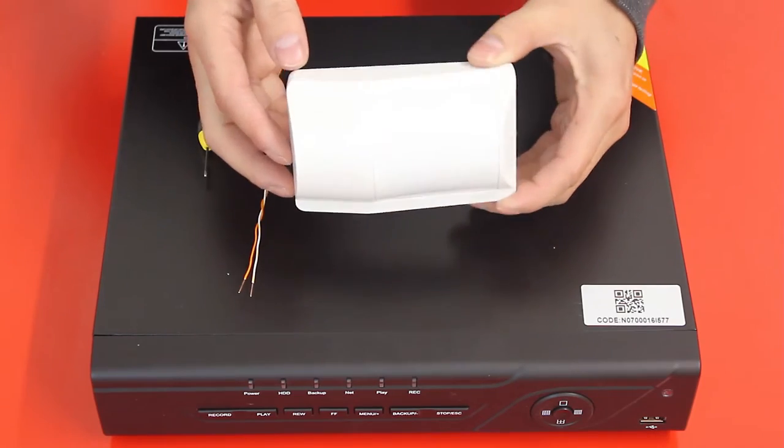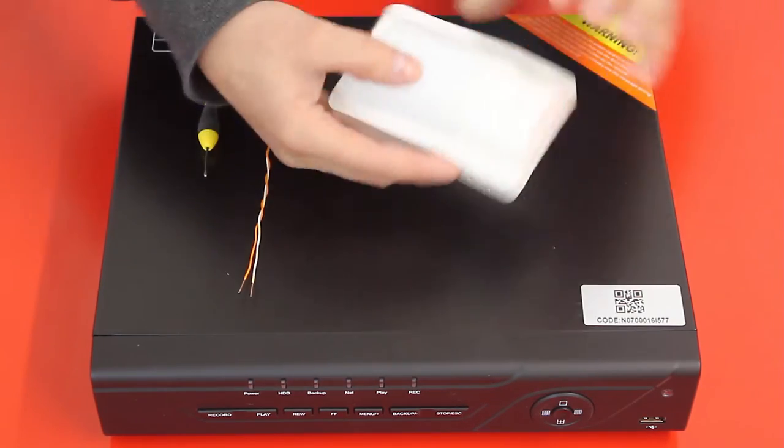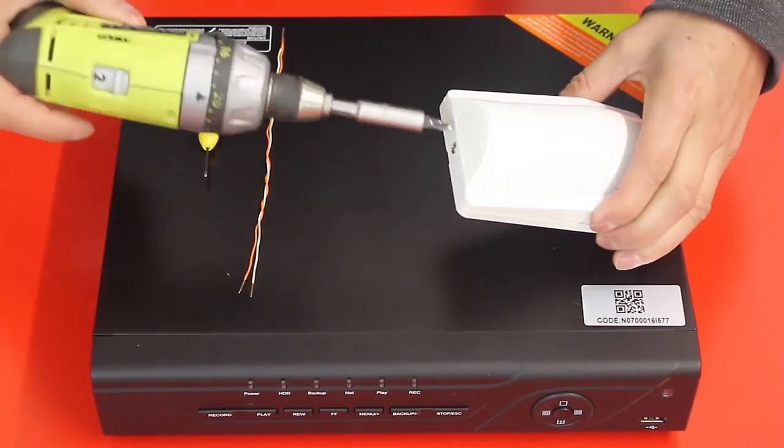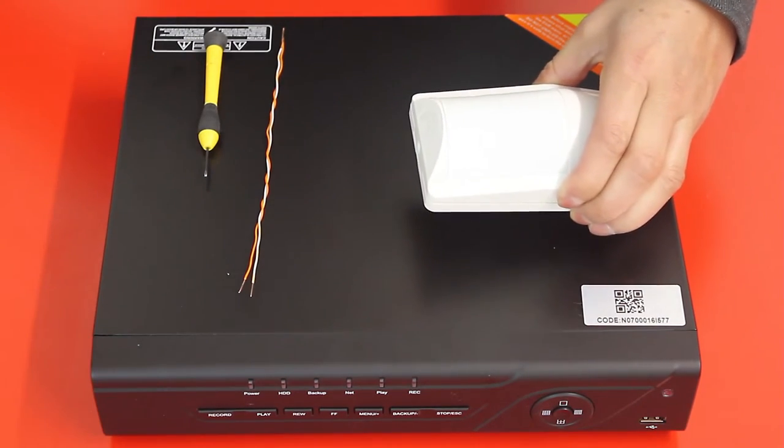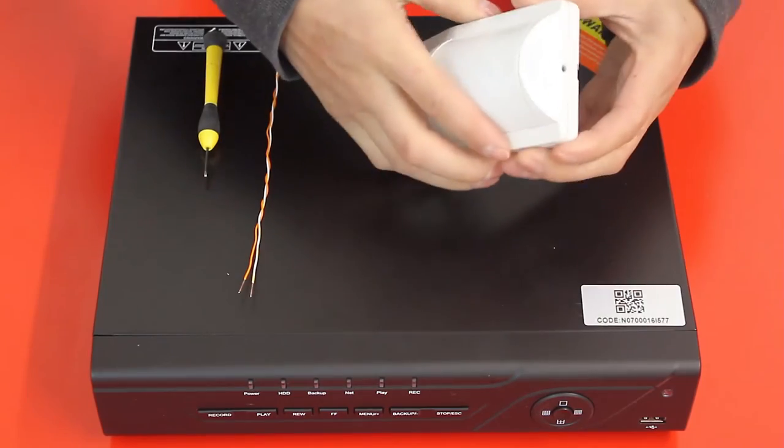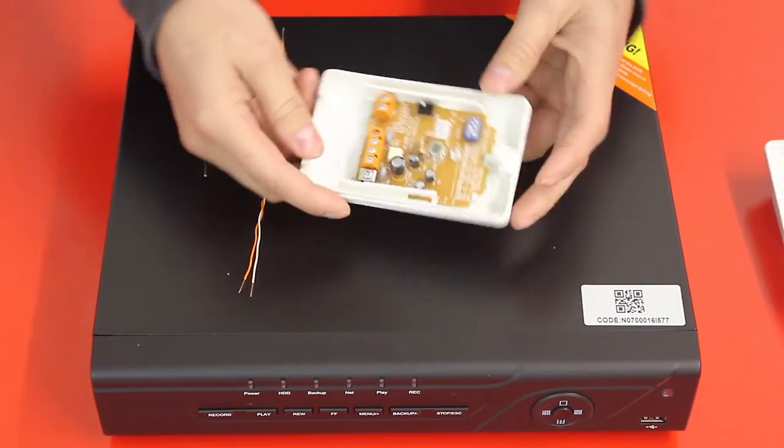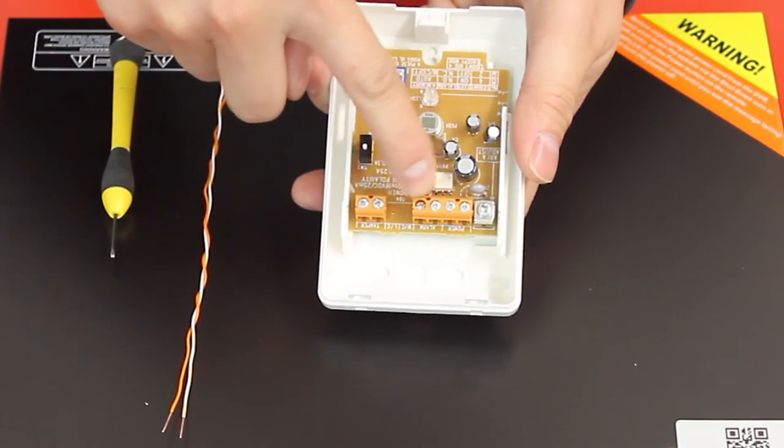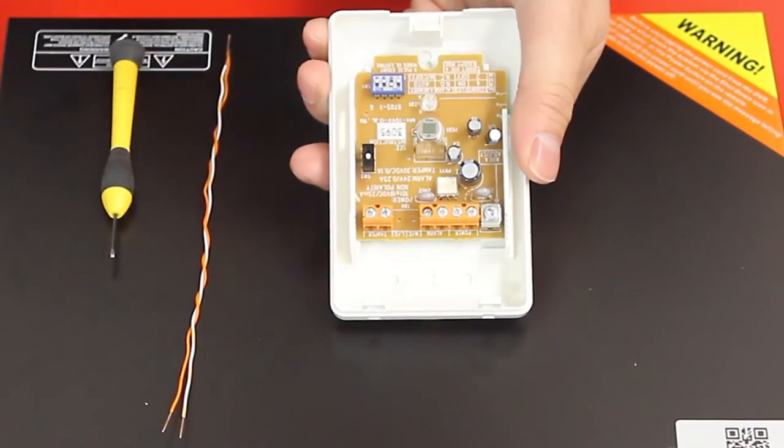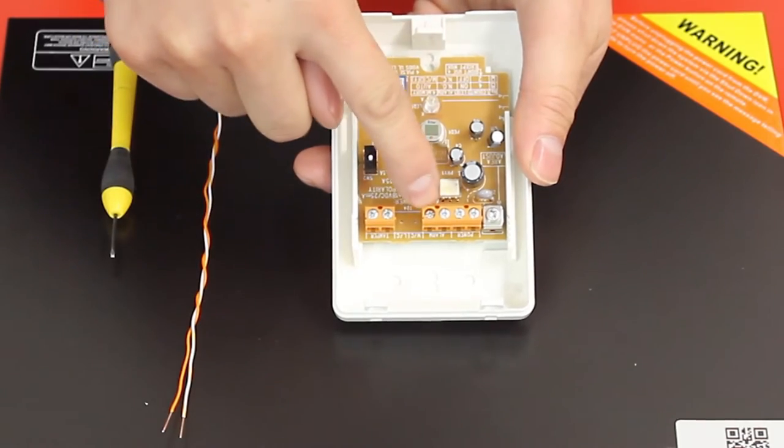This is a standard motion sensor. First we are going to open it up. On this motion sensor you are going to have to look for where the alarm output is. On this specific case it's right here.